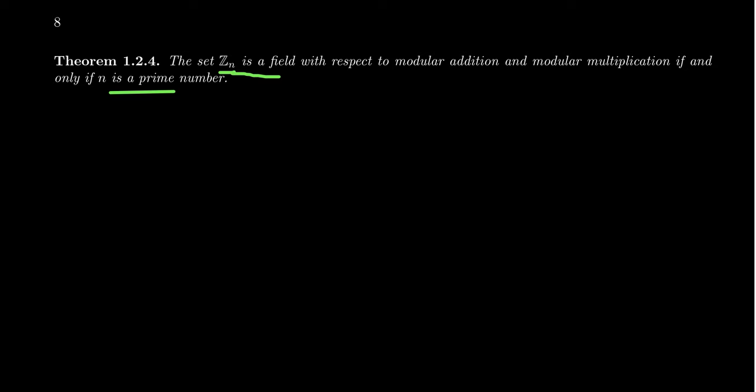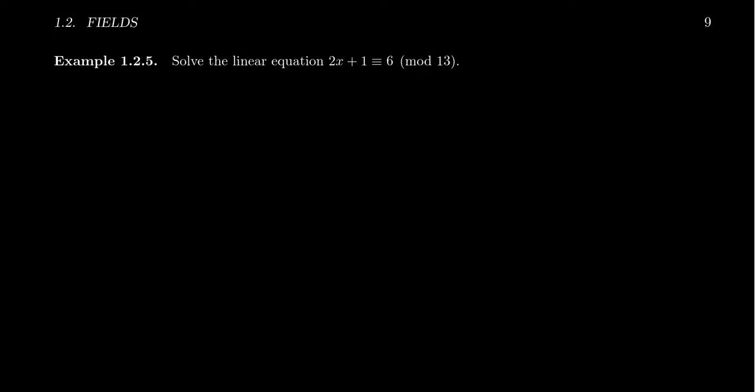Because in order to do linear algebra, we need a field and a general number n doesn't exactly work. You can see in the homework questions some explanation of what goes wrong if you have a composite number instead of a prime. But with that assumption, let's work over some finite fields and solve the associated linear equations.